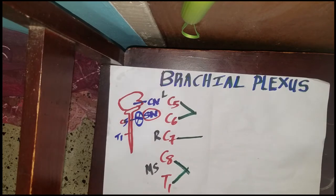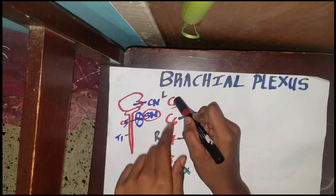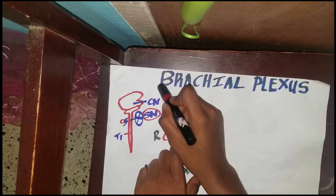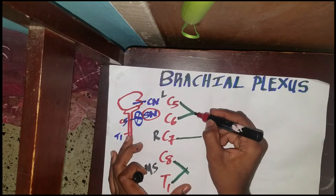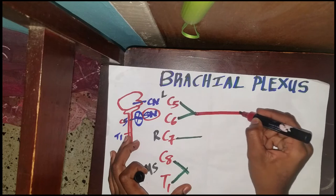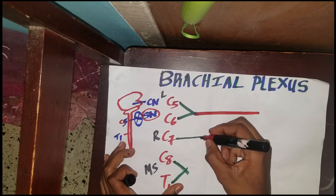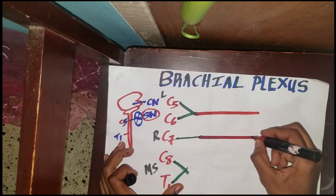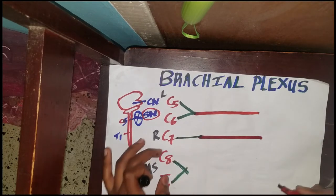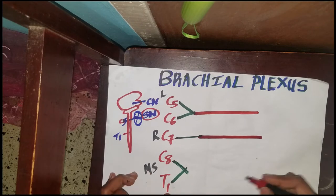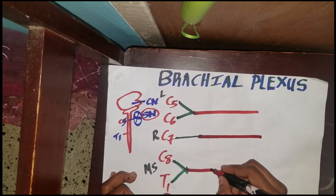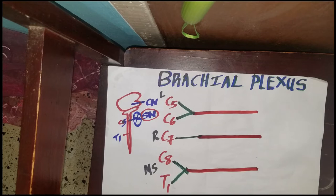Now, how they travel: C5 and C6, the lecturers, will travel together — we draw a line like that. The residents, C7, still travel by themselves. And C8 and T1, the medical students, help each other and travel together as well.